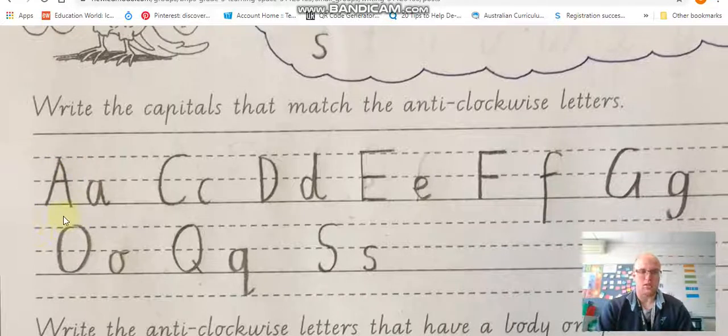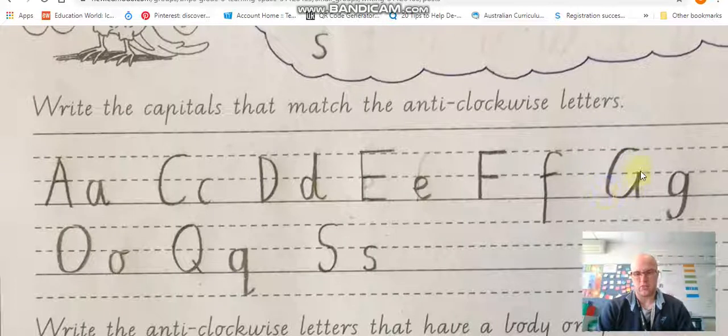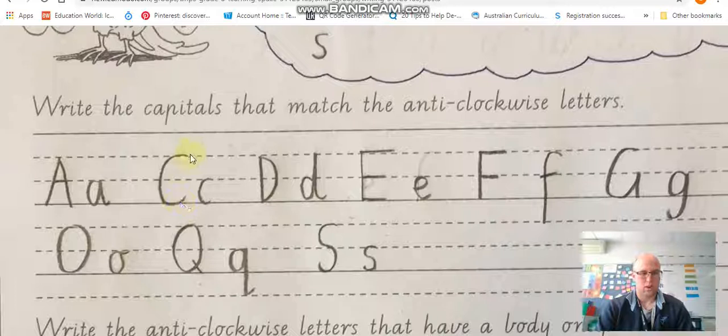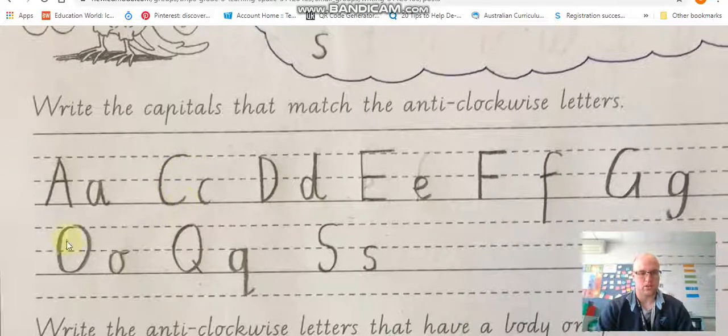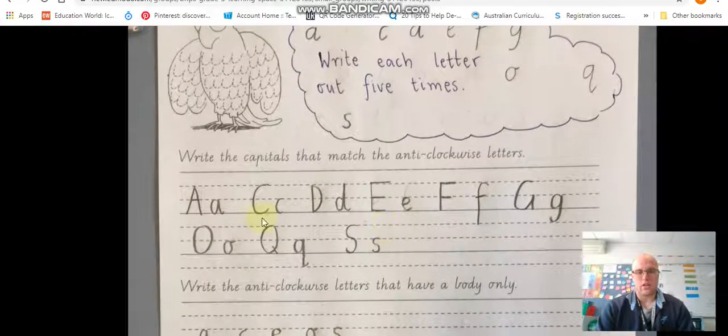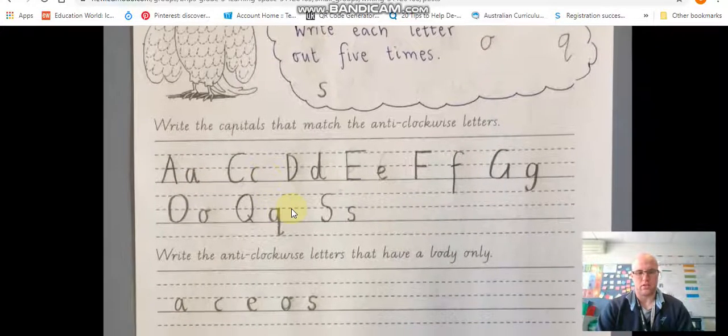With the capital letters all capital letters will start at the dot at the top dotted third. They don't go down into the lower level. Okay the lower dotted third. If you to remember the G it's kind of like a C but then it goes right up to the dotted third and down. Whereas the uppercase C just goes around. Q kind of like a O has this little line that crosses.